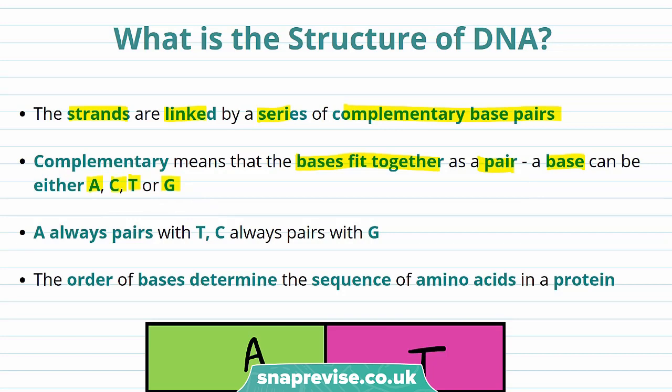As I said before, they come in pairs. The rule is that A always pairs with T, and C always pairs with G. This is really, really important, as if this doesn't happen, DNA could be carrying the wrong information.